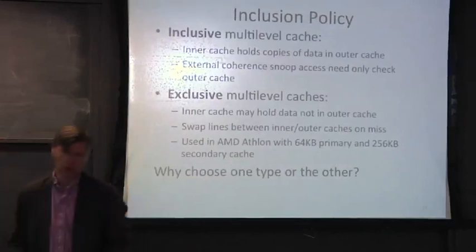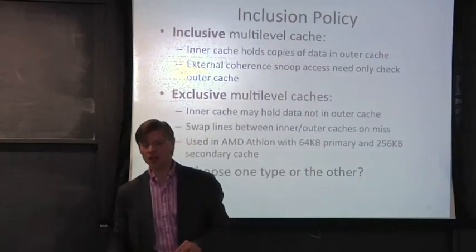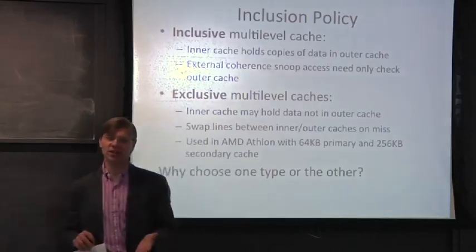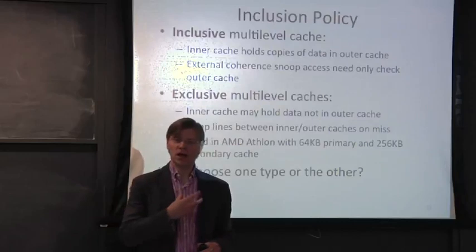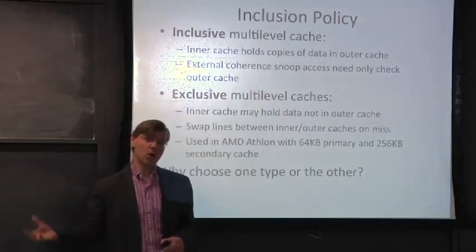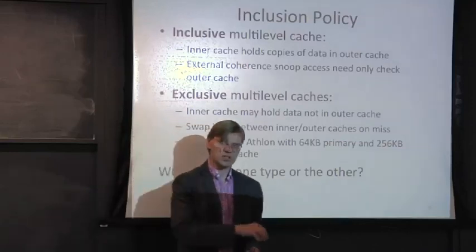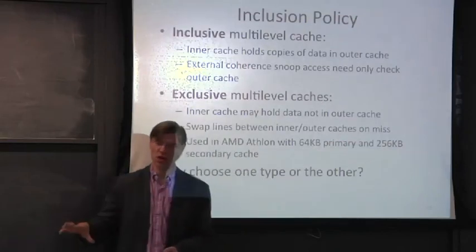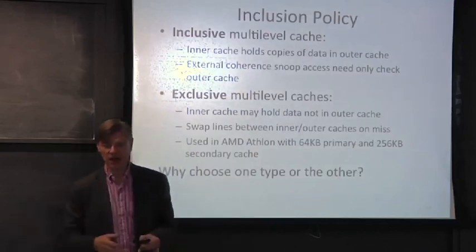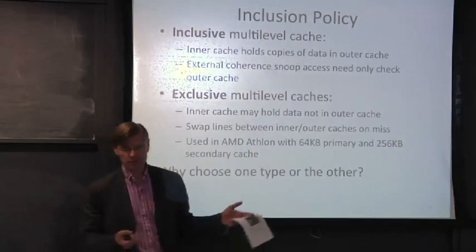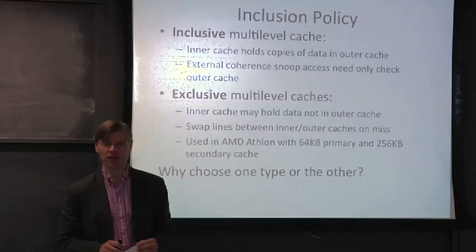Another co-mingling question is the inclusion policy. With multiple levels of cache, you can have the level one holding a certain piece of data while the level two either has or doesn't have that same data. We call a cache inclusive when anything in a lower level cache is also present in a higher level cache — the inner cache holds copies of data in the farther out cache. External snoop accesses then only need to check the outer cache.